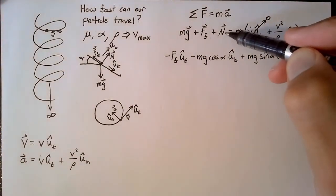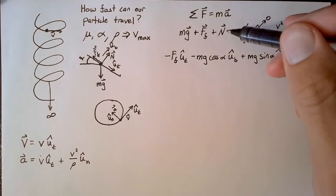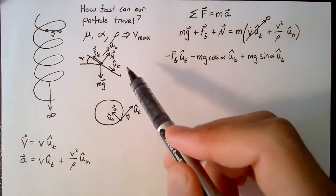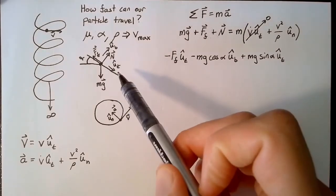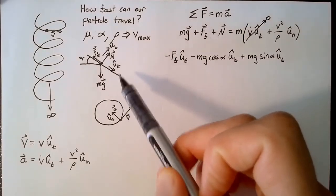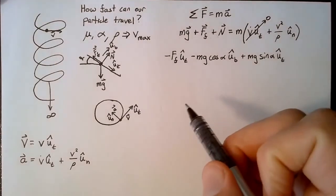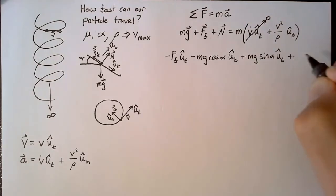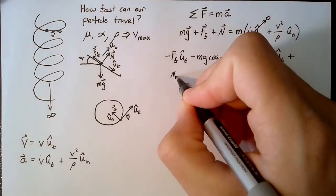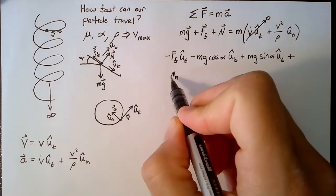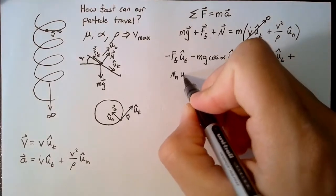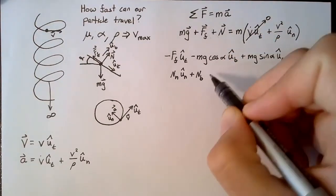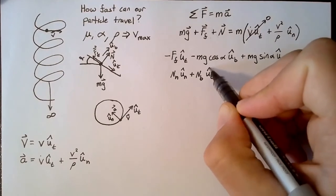Now let's split up our normal term. By definition, the normal force can never be in the direction of velocity. And so we can omit the ut components, because there's no ut components. But we do need some normal and binormal components of the normal force. I'm going to write this as n sub n, meaning the normal components of the normal force. That's in the un direction. And n sub b, which is the binormal component of the normal force.